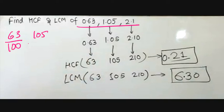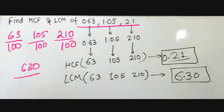For LCM, we remove the fractions 63 by 100, 105 by 100, and 210 by 100. The highest common factor of the denominators is 100, so the LCM answer will be 6.3.